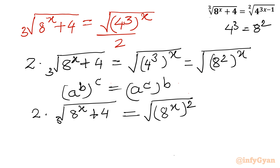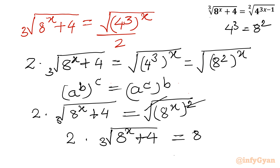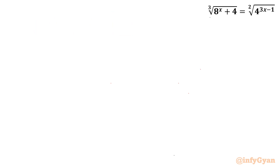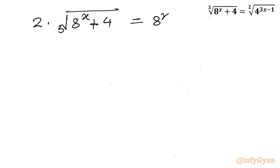Now we can cancel the square root with the square. So the equation is converted into 2 times cube root of 8^(x+4) equal to 8^x.